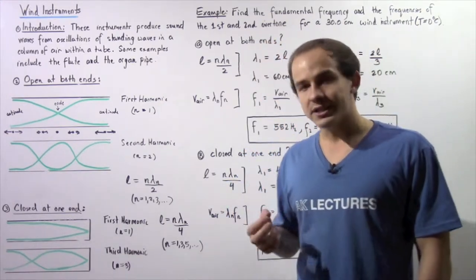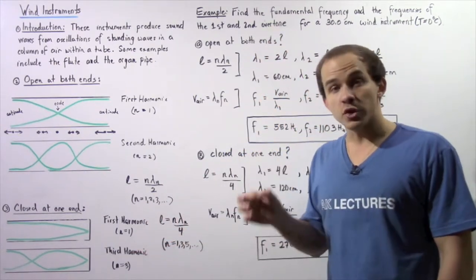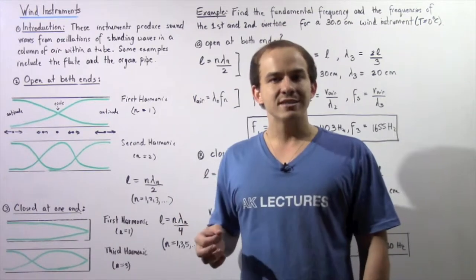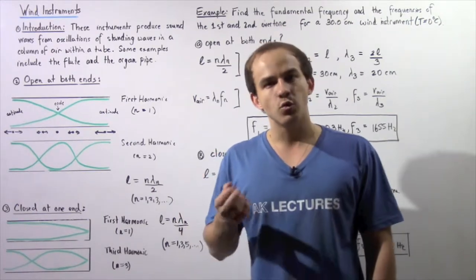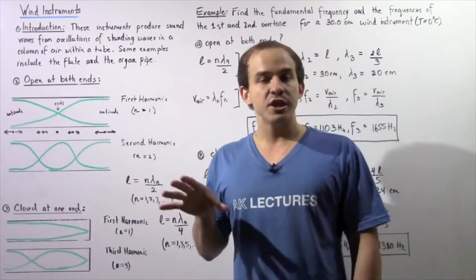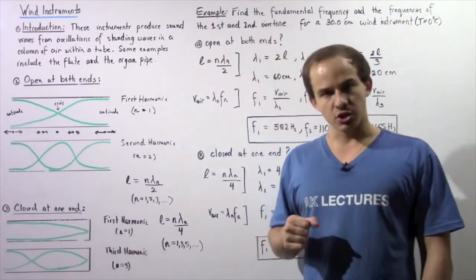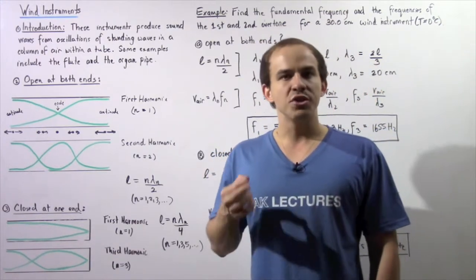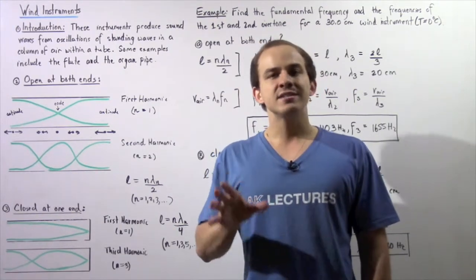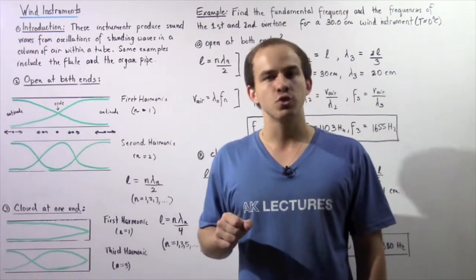Now how exactly does a stringed instrument produce sound? Well, if we pluck the string on that instrument, that string begins to oscillate. It creates a standing wave, and the oscillation of the standing wave within that string causes the surrounding air molecules to vibrate with the same exact frequency. That produces a sound wave that has the same exact frequency as the standing wave inside the string.